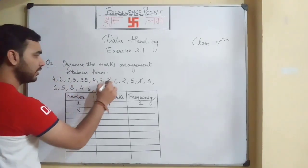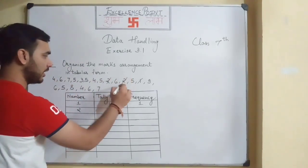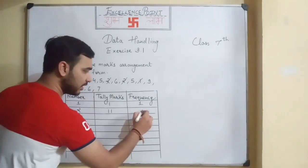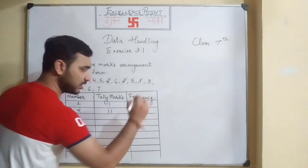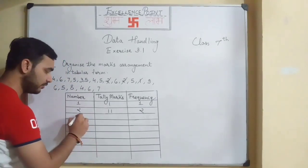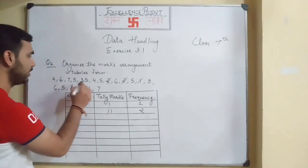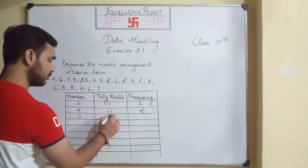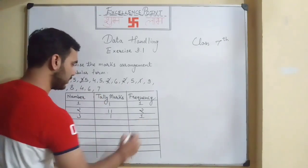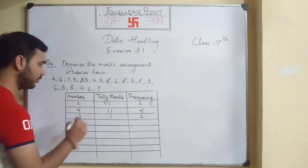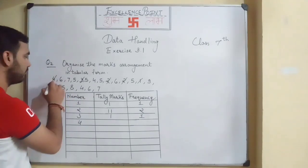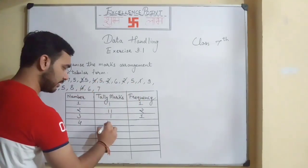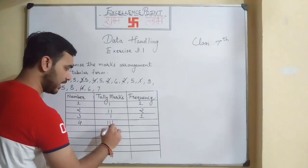For two, it is occurring two times, so we put two tally marks and write two in the frequency column. Similarly for three, it is occurring only one time, so we write one. For four, it is occurring three times, so we write one, two, three tally marks and three in the frequency column.